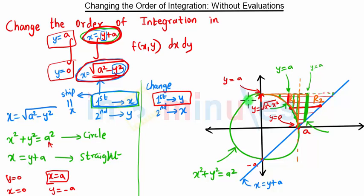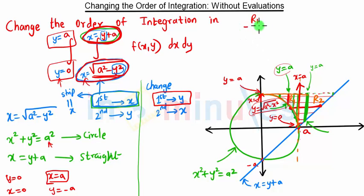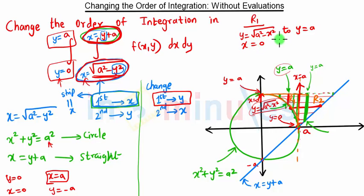Here we are going from x equal to 0 till this point. What is this point? This point is x equal to a. So if you see, first we have the limit for x and then limits for y. Now we will have limits for y first and then for x. So region R1 limits are: y going from the circle to the line y equal to a, and x going from 0 to a.